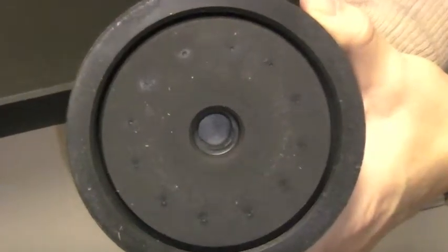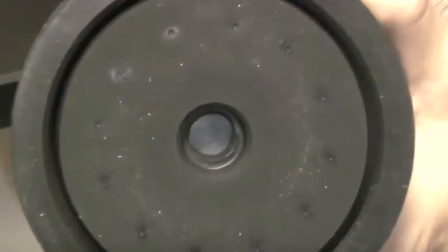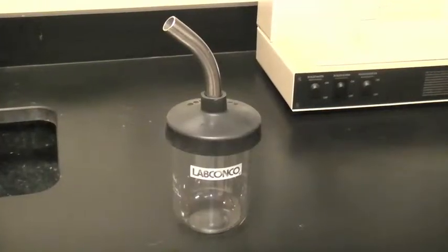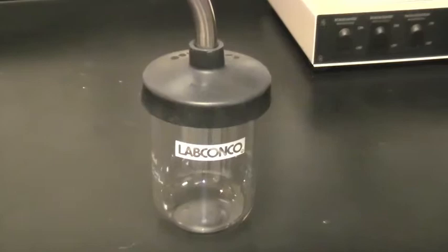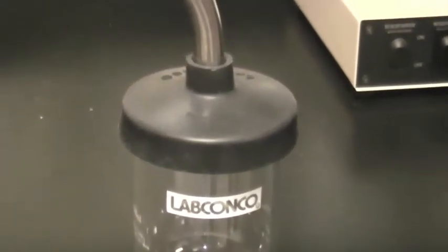When viewing the underside of the lid, the filter paper should completely cover the hole. Snap the lid and adapter on the flask until a tight seal is formed and installation is complete.